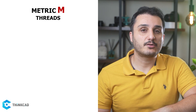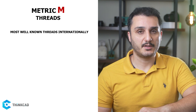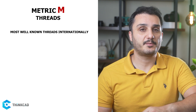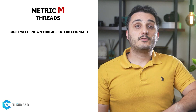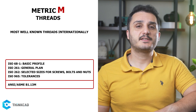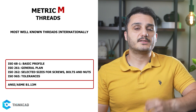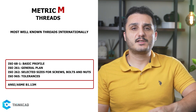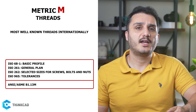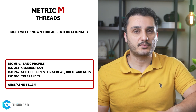Let's talk about metric threads, also known as M-threads. M-threads are the most well-known thread series in the world and are usually the go-to choice for general purpose applications due to their availability and solid design. To learn more, you can use ISO 68-1 or ASME B1.13M. The ASME standard has much more information in a single document and is based on several ISO standards. If you use ISO, there are more standards for M-threads and each covers one aspect — you can see the standards and what they each describe on screen.